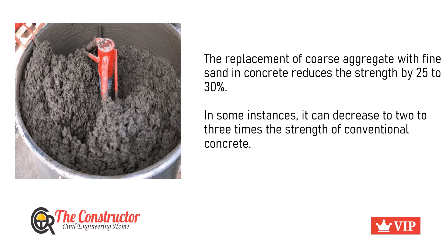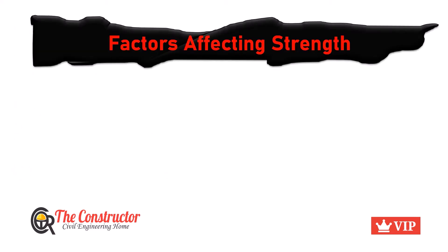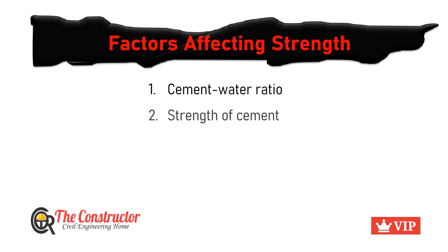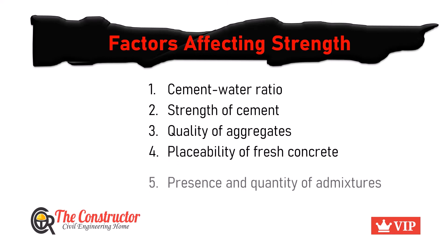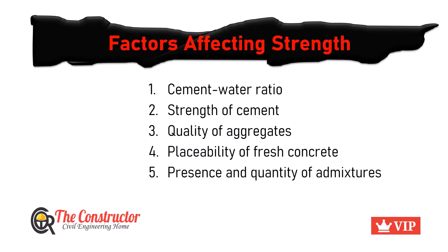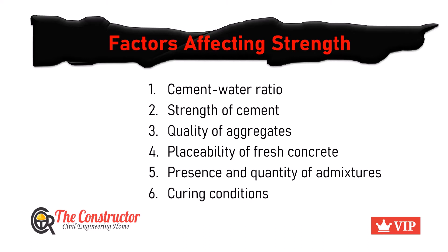In general, the important factors that affect the strength of fine grain concrete are: the cement-water ratio, the strength of the cement, the quality of aggregates used, the placeability of the fresh concrete, the presence and quantity of admixtures, and finally the curing conditions.